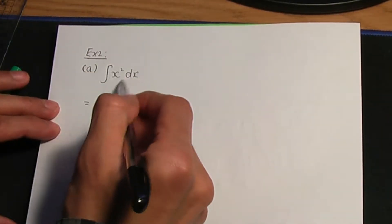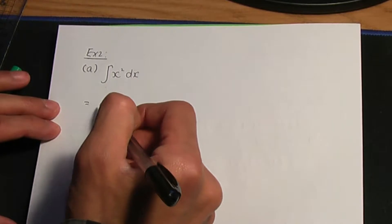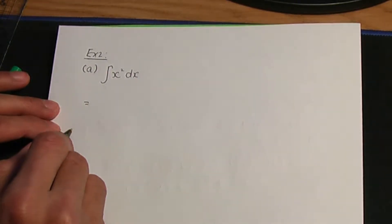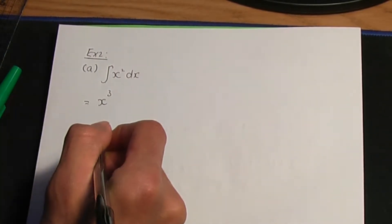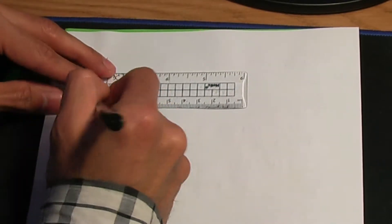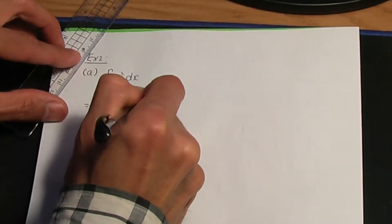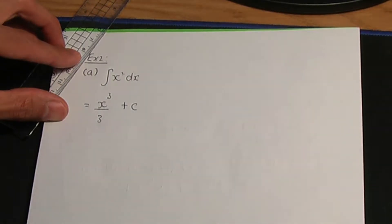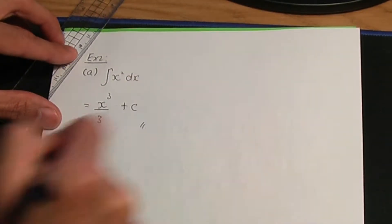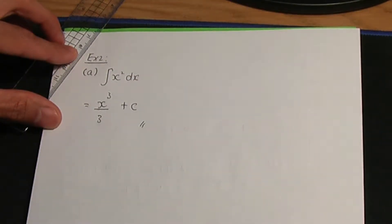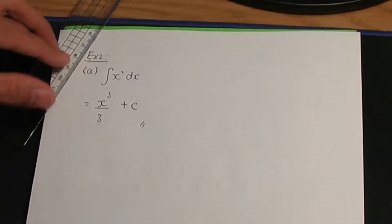Let's integrate x squared. Remember the process of integration: add 1 to the power. The power is 2, so 2 plus 1 is 3. Divide by that result, 3. But we need to add a constant of integration c. So this should be the solution to part a.